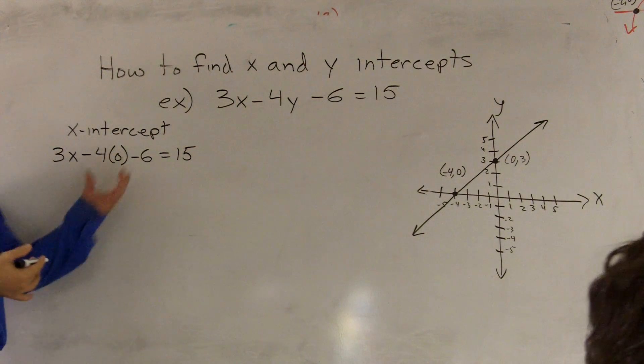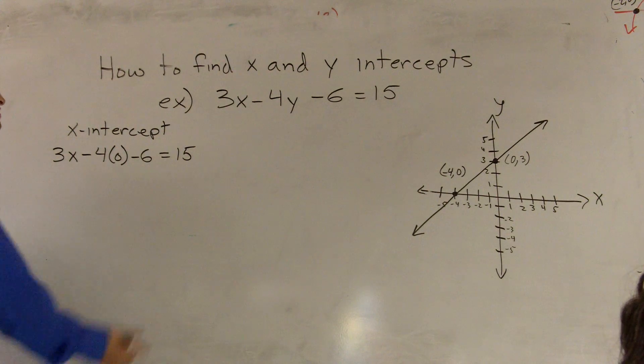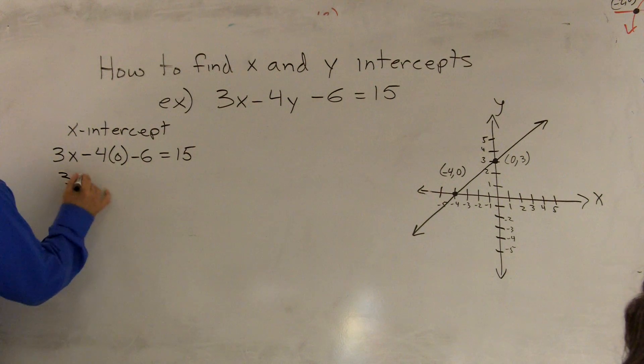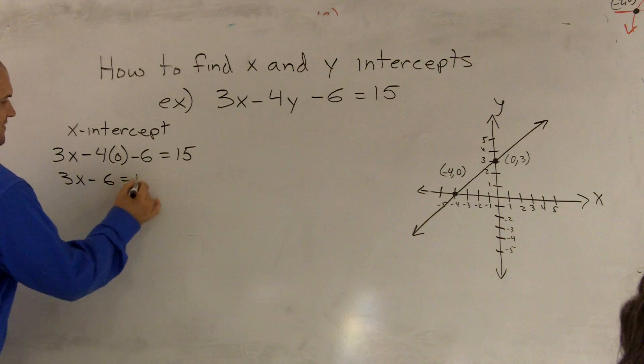Now, it's just a simple matter of solving for x to get my value for x. So, 3x minus 4 times 0 obviously is 0, minus 6 equals 15.